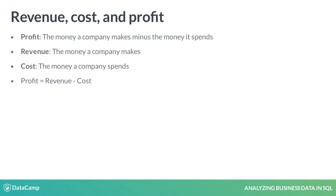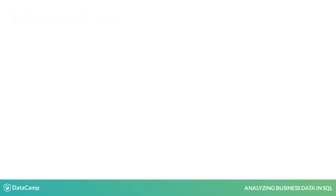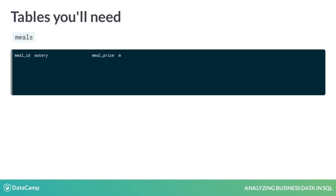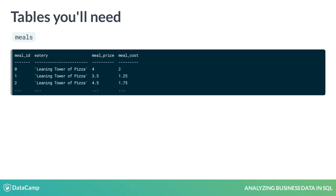Deliver stores its data in a SQL database. Let's explore the tables needed to calculate revenue. The first table is meals. Each row represents a meal that users can order through the app. Each meal has a meal ID, an eatery, a price — what the user pays for it — and a cost, what Deliver pays the eatery for it.